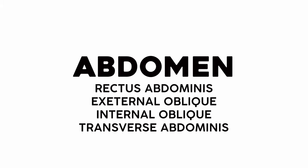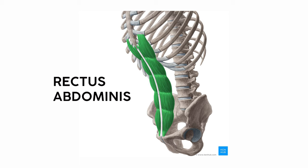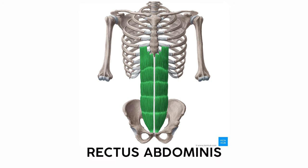You have four big ones to remember here. Luckily, they all follow a straightforward and predictable naming convention. What most people know as the abs is the rectus abdominis — those showy six-pack muscles. It uses the rectus nomenclature, meaning a straight muscle, plus abdominis, which is self-explanatory.